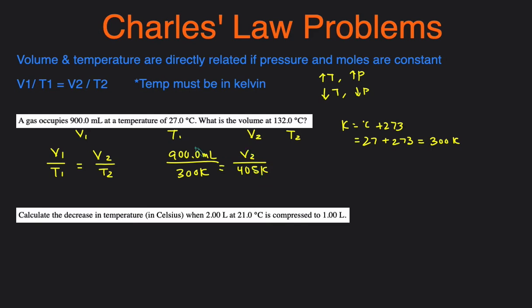To do that, Kelvin equals degrees Celsius plus 273. So that'll be 27 plus 273, which will give us 300 degrees Kelvin. So that'll be over 300 degrees K equals V2, which is what we're solving for, divided by 132. So we just do 132 plus 273, and that'll be 405 degrees Kelvin. Then to solve for V2, we just cross-multiply. So this will be 900.0 milliliters multiplied by 405 Kelvins divided by 300 Kelvins will equal V2.